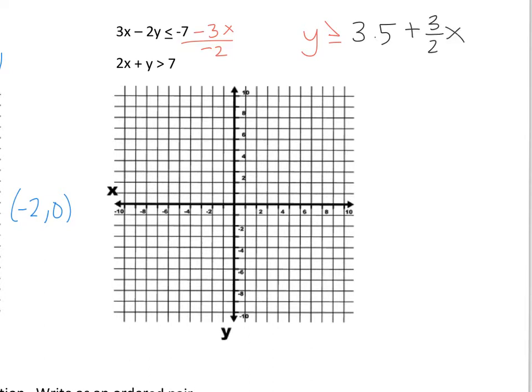So I'm going to start at 3 and a half and go up 3 right 2, up 3 right 2. And it's going to be a solid line. And I'm going to shade above the line.